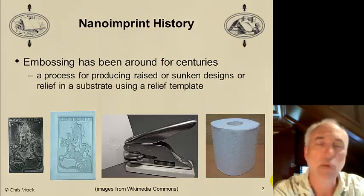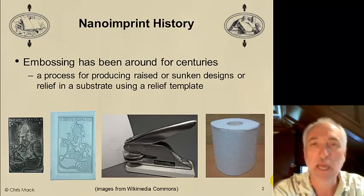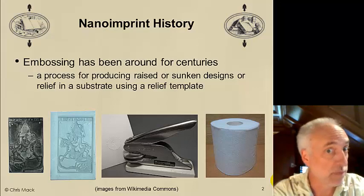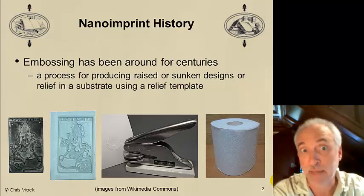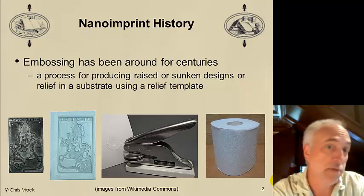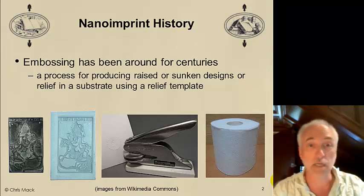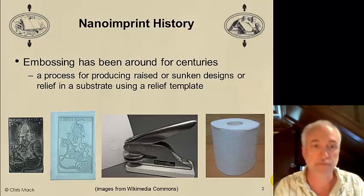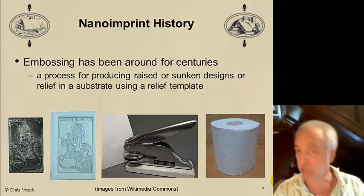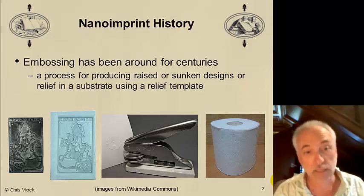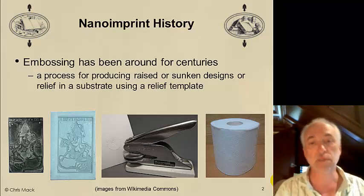Nano-imprint, while an impressive sounding name, has in fact been around for centuries. Maybe not in the nano side, but if we don't worry about printing nanometer scale patterns, then imprint lithography is nothing more than embossing. Embossing has been around for centuries. It's a process that uses a relief pattern on a template, which is then pressed into material that's soft enough to allow that pressing, and it creates a copy of the relief pattern in the template. We use it for paper, for leather, plastics — lots of applications for embossing.